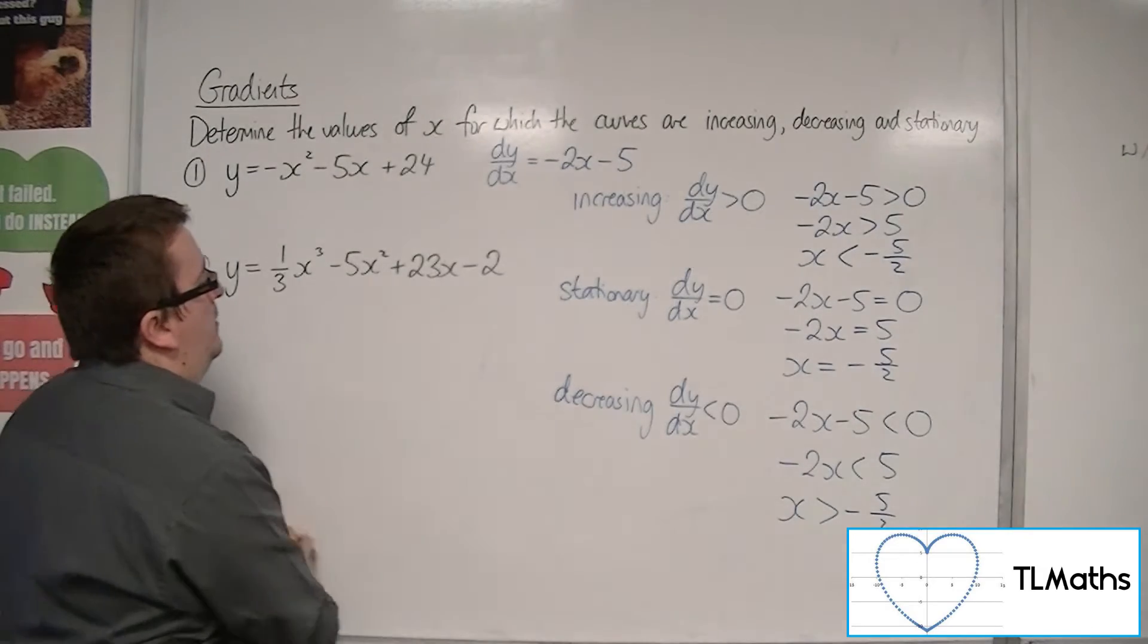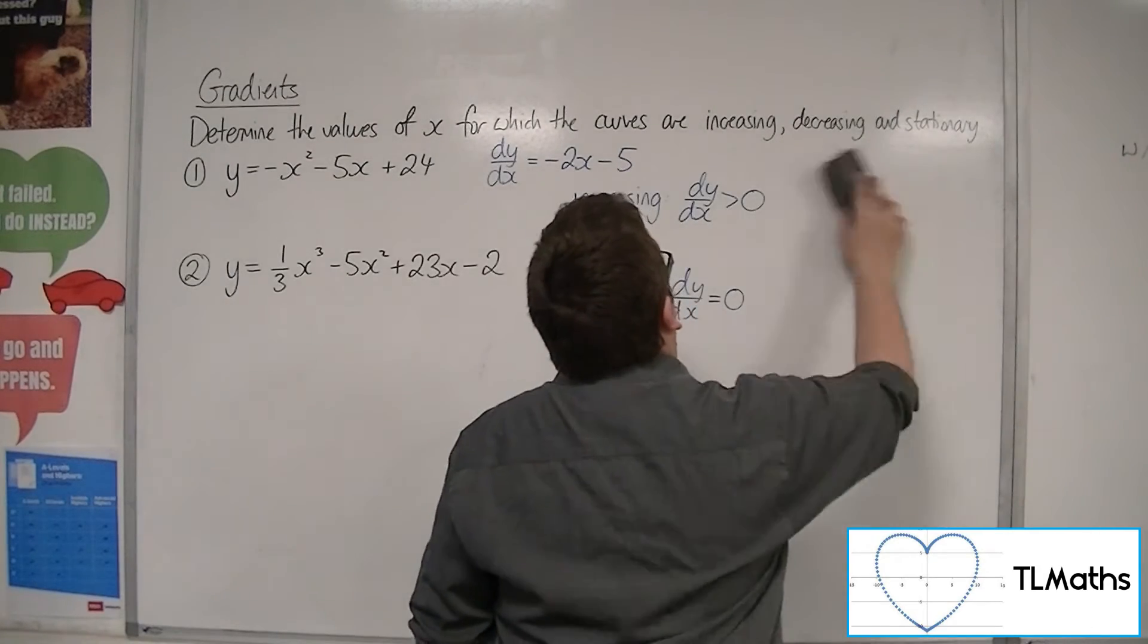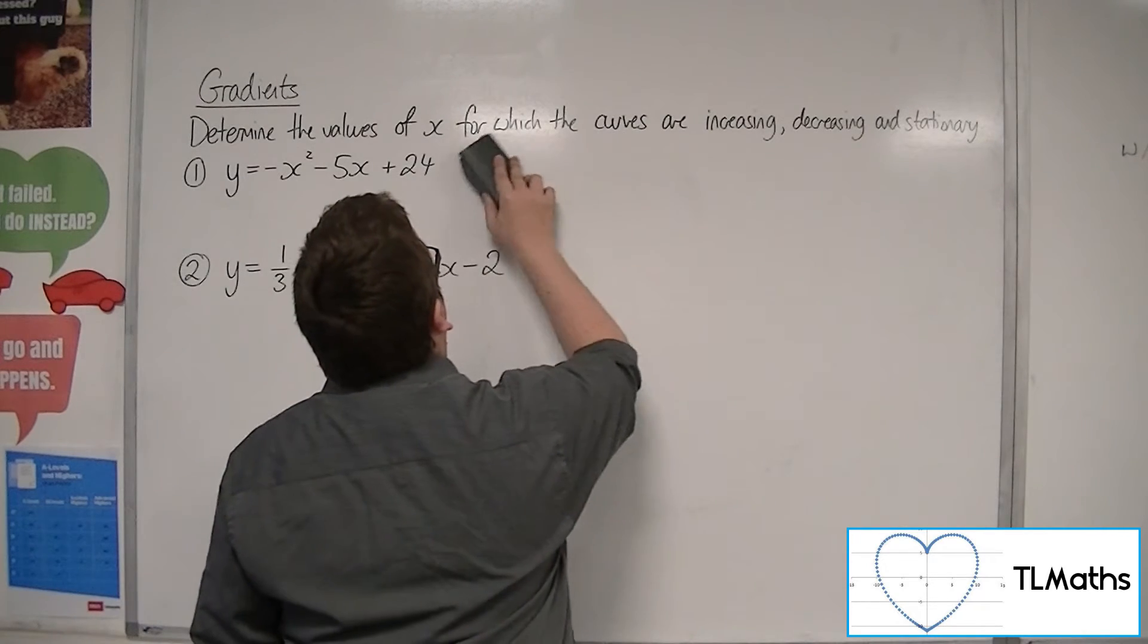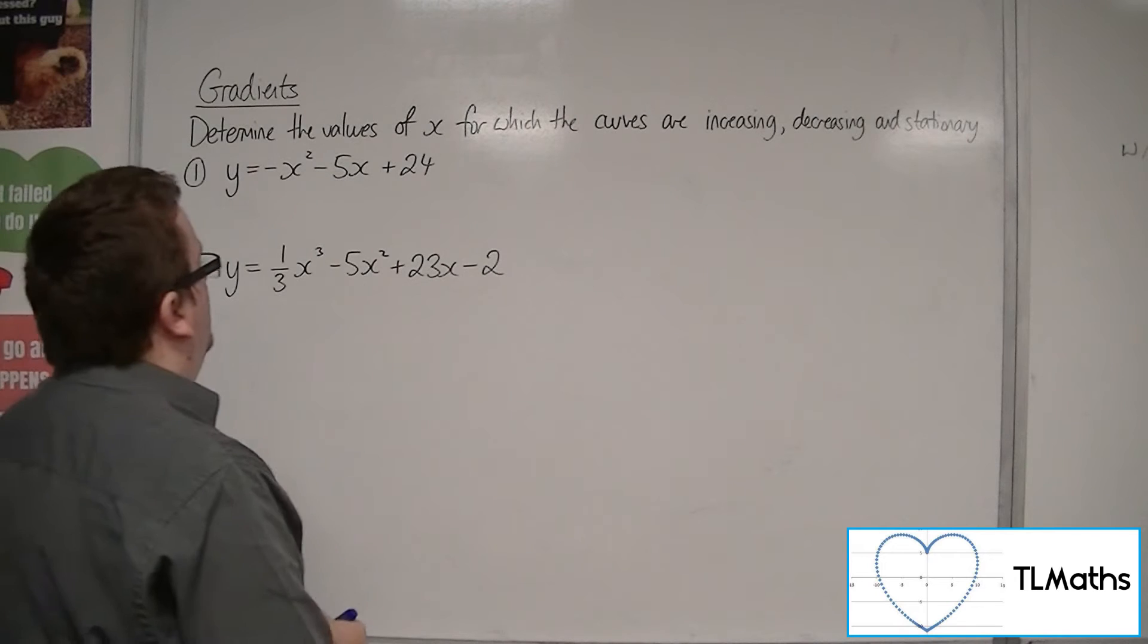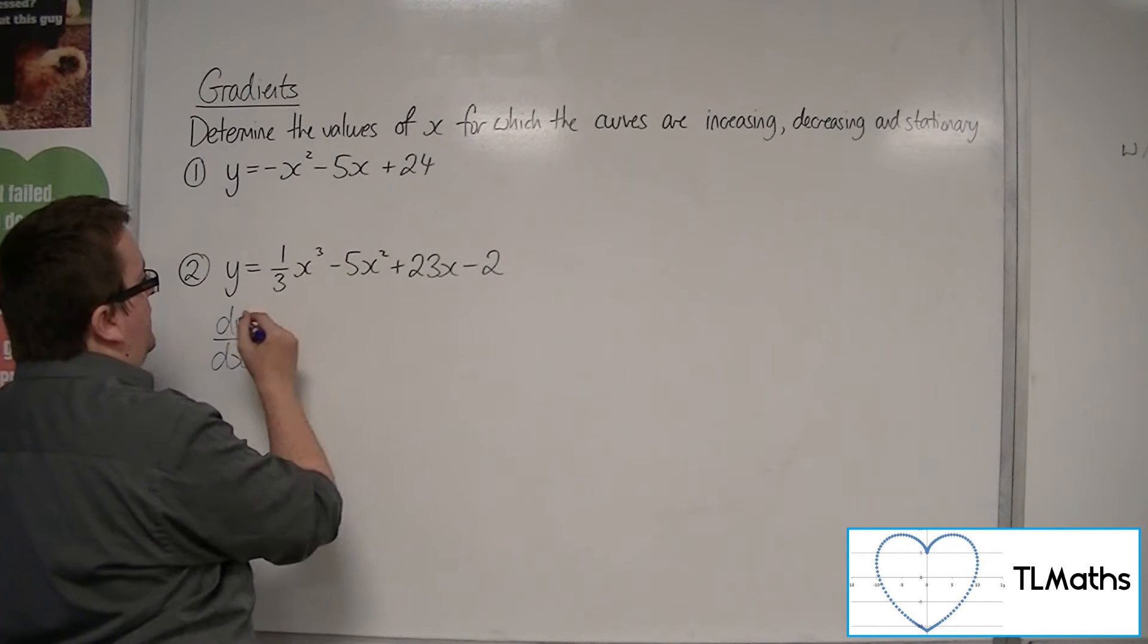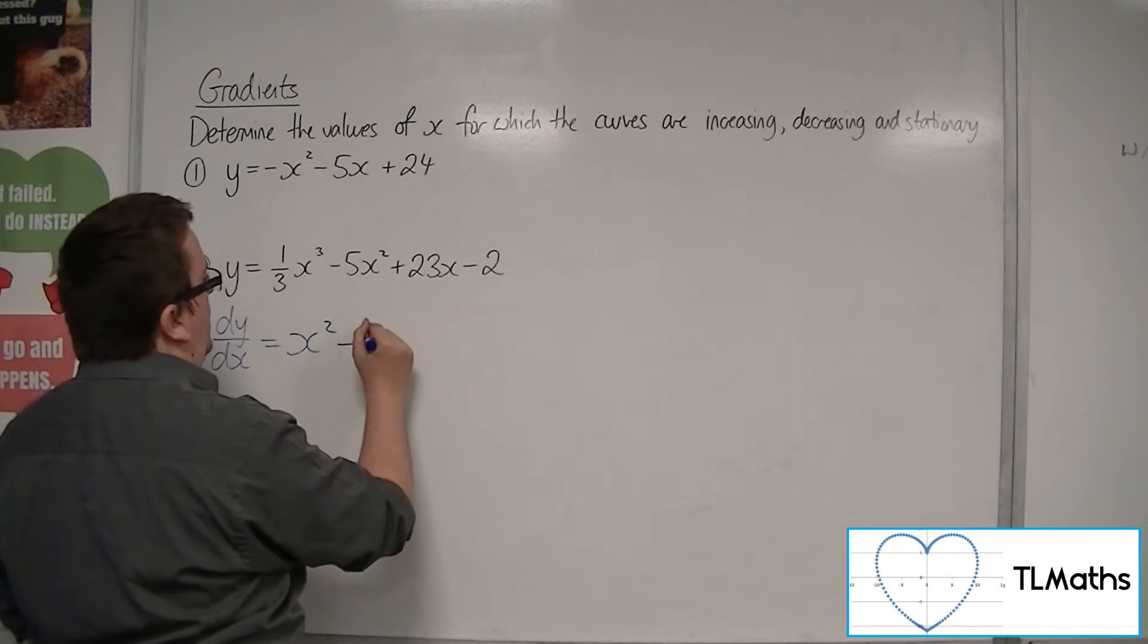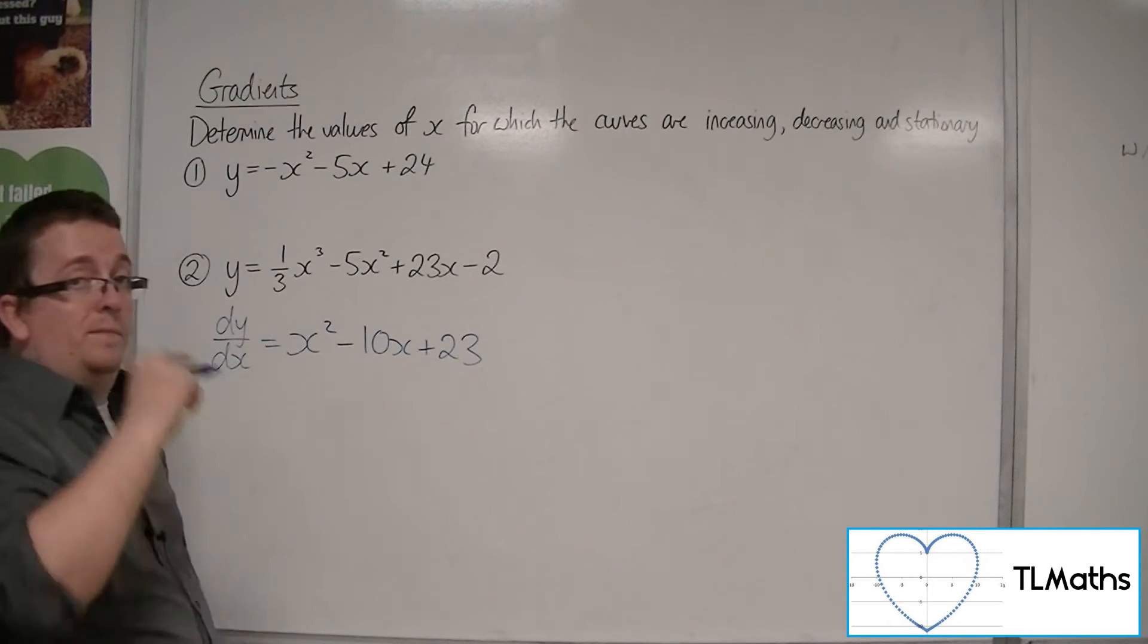So, let's have a look at number 2. So, first of all, dy by dx. So, differentiating this, I'm going to get the 3 multiplying with the 3. So, x squared, take away 10x, plus 23.